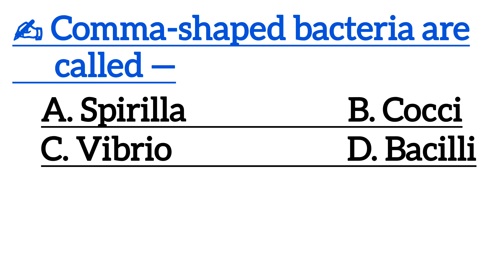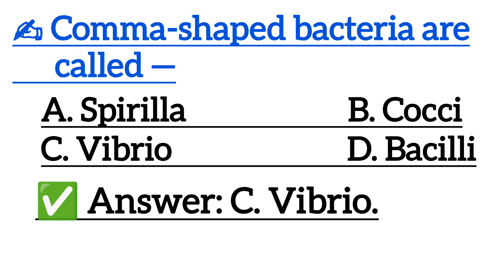Next one is: Comma shaped bacteria are called — Option A: Spirula, Option B: Cocci, Option C: Vibrio, Option D: Bacilli. Correct answer is Option C: Vibrio.